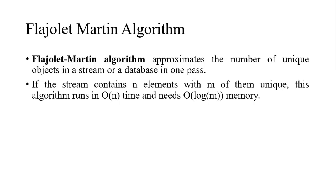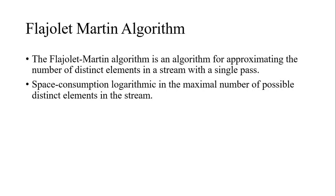The FM algorithm finds distinct elements from a data set or input stream in a single pass. If the stream contains n elements with m of them being unique, this algorithm runs in O(n) time and needs O(log m) memory. O(log m) is the memory utilization and O(n) is the time complexity of the FM algorithm.